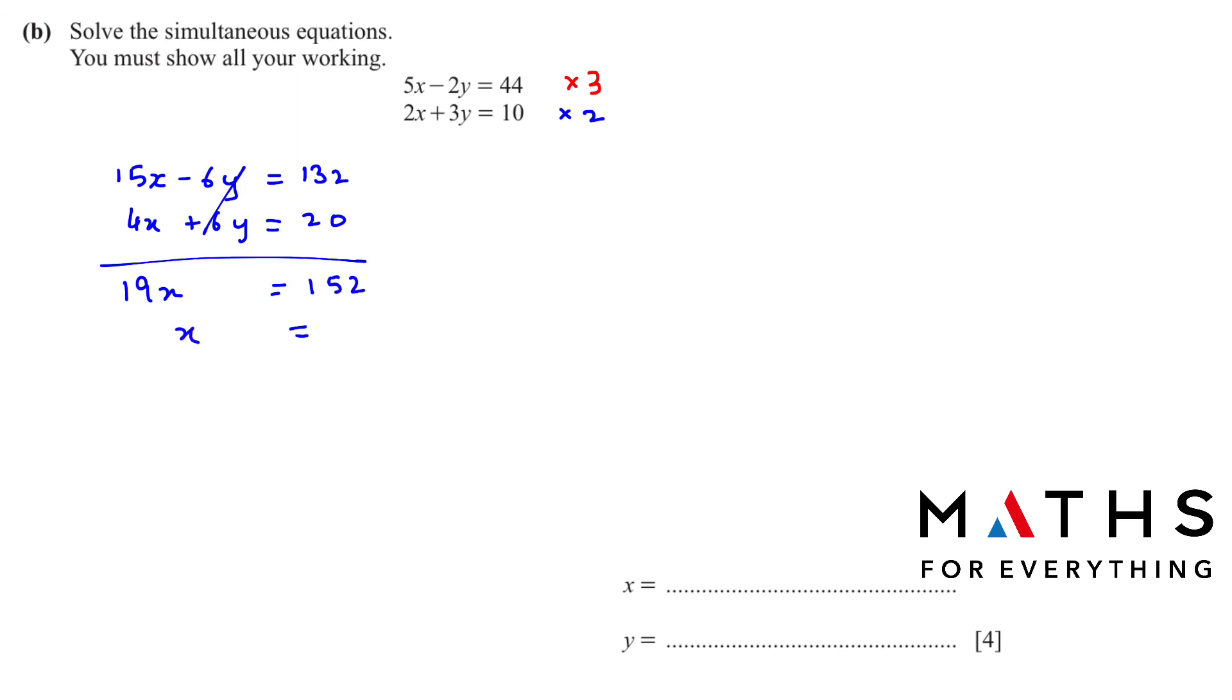Use the calculator. This is a multiply. When we shift to the other side, it's a divide. 152 ÷ 19 = 8. So our x is 8. To find y, substitute x = 8 in whichever equation you want. I'll substitute in the first one. So 5 × 8 - 2y = 44. We'll get 40 - 2y = 44. -2y = 44 - 40. We'll get 4. So y is going to be 4 ÷ -2, which is -2. Y = -2.